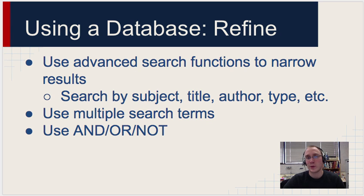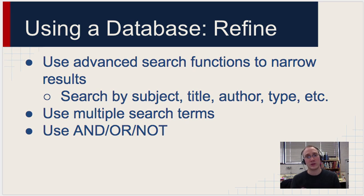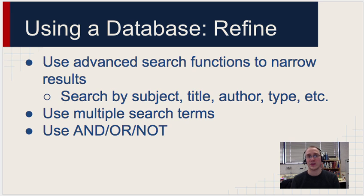The next step in using a research database is to refine your results. This is where you take those keywords and subject terms that you found and do new searches using them. You're going to use advanced search functions at this point — searching by subject, by title, author, and type of resource.